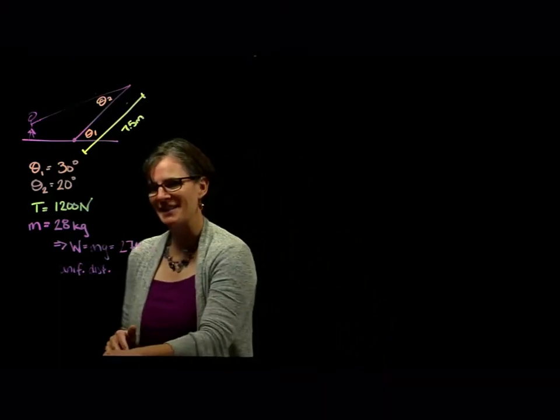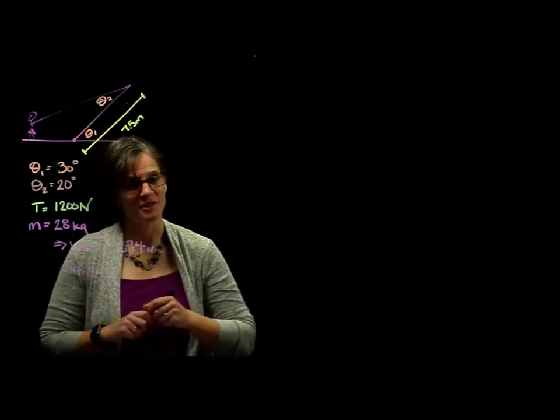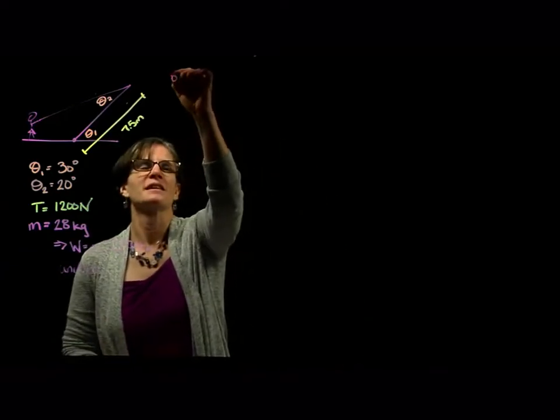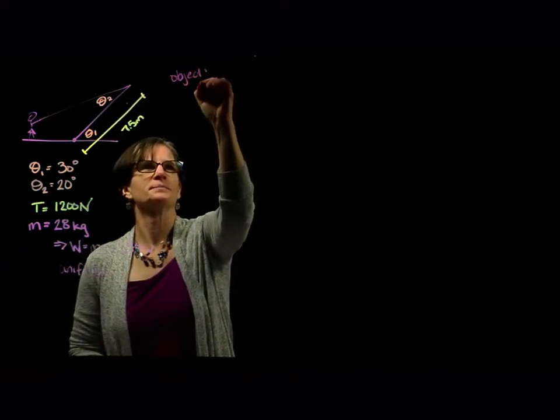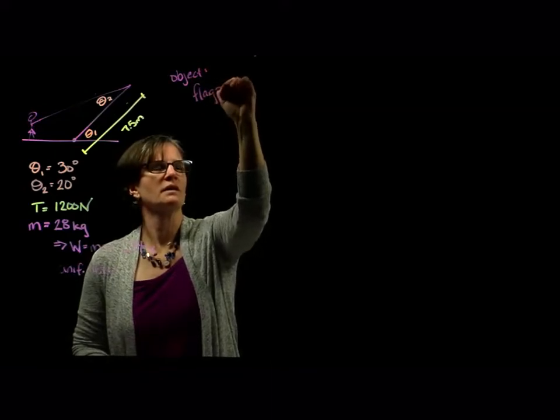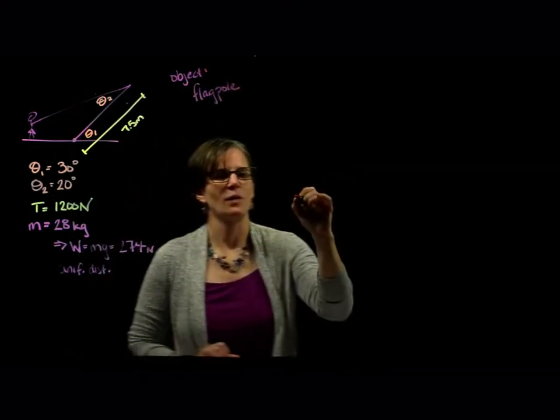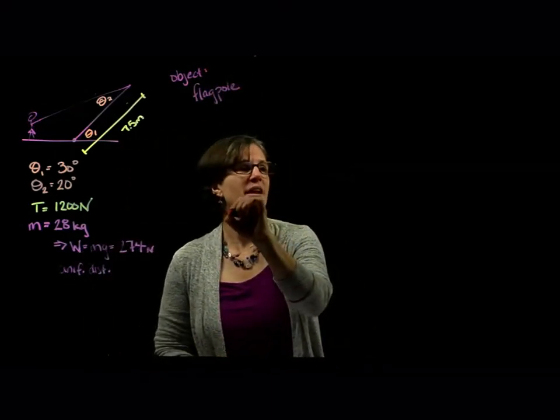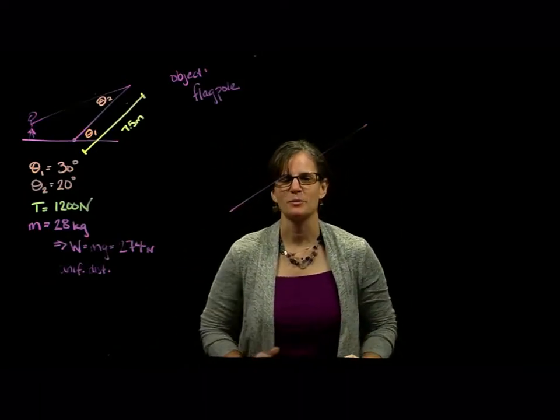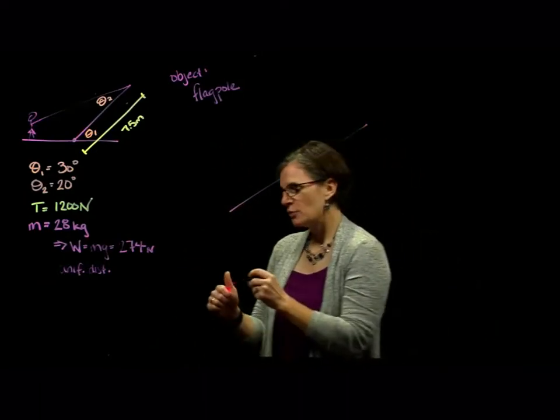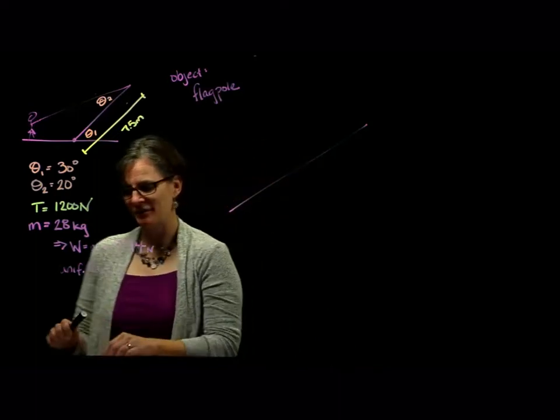So let's draw an extended free body diagram of our object of interest, which is the flagpole. I like to draw my extended free body diagrams in the orientation that the object is. I think that's pretty standard. So what are the forces acting on this flagpole?